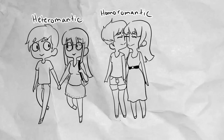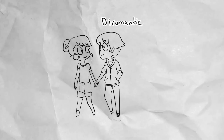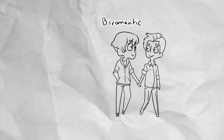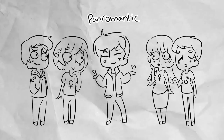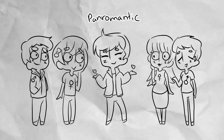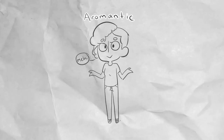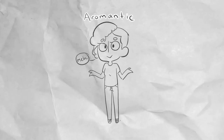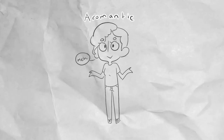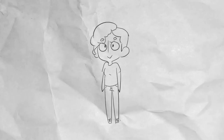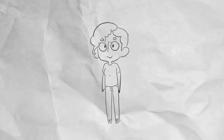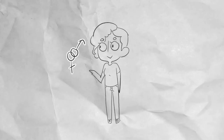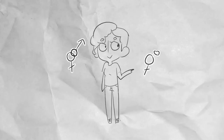Heteroromantic, homoromantic, bi-romantic, panromantic, and aromantic are all types of romantic attraction, and these can be mixed to fit with other types of sexual attraction. An example of this is bisexual and homoromantic.